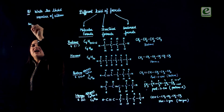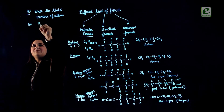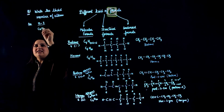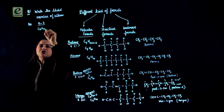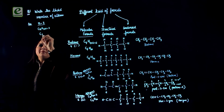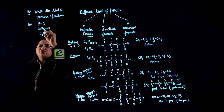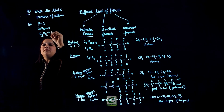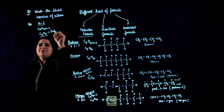The answer is: third member means N is equal to 3. The formula of alkane is CnH2n+2. So the third member will be C3H8 (since 3×2 = 6 plus 2 = 8). This will be the molecular formula and the name will be propane.